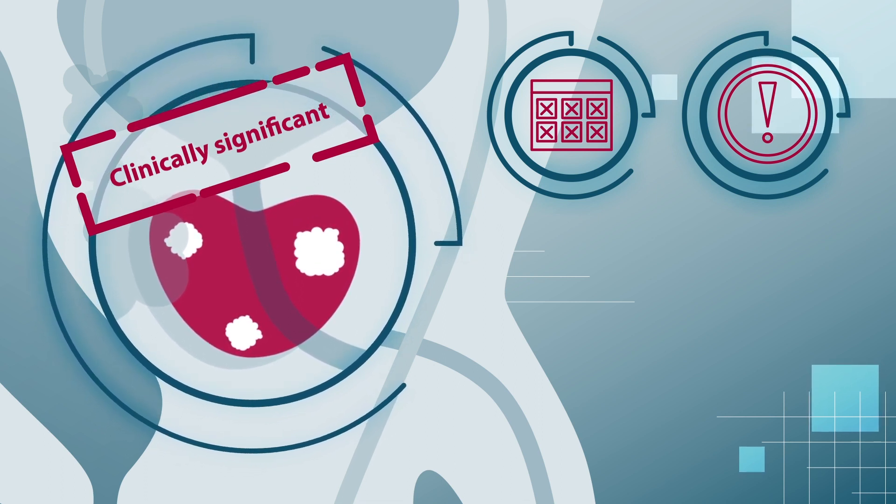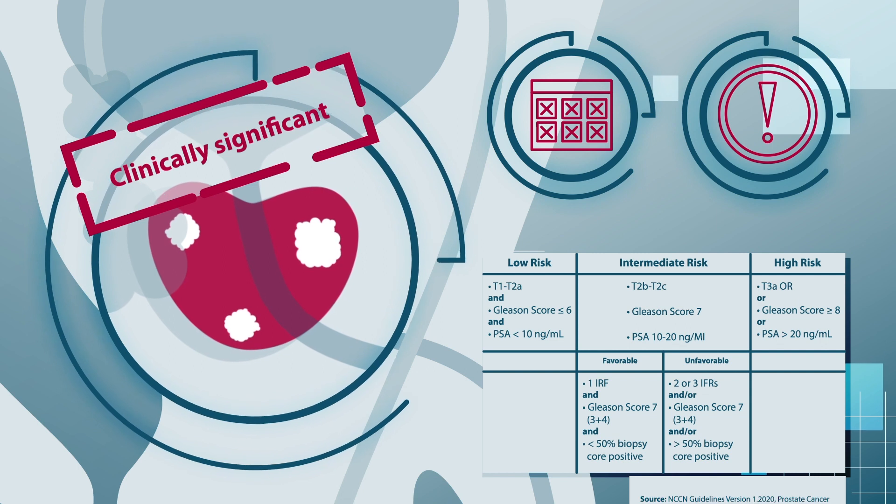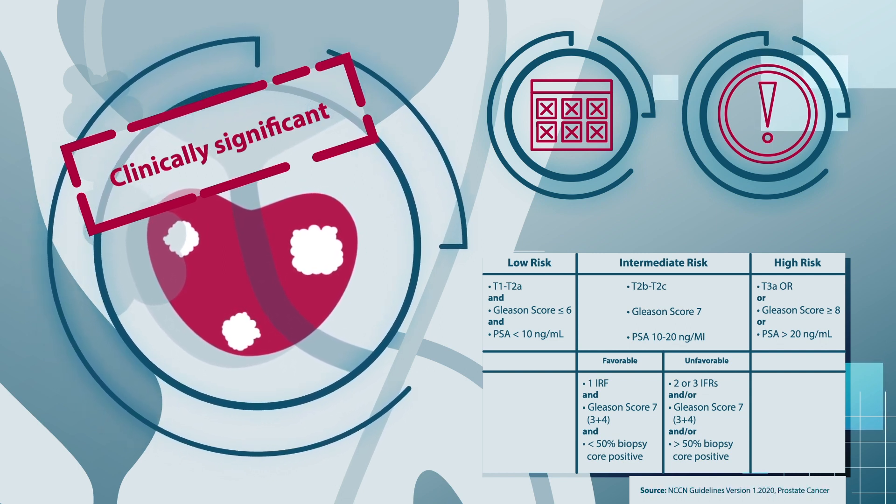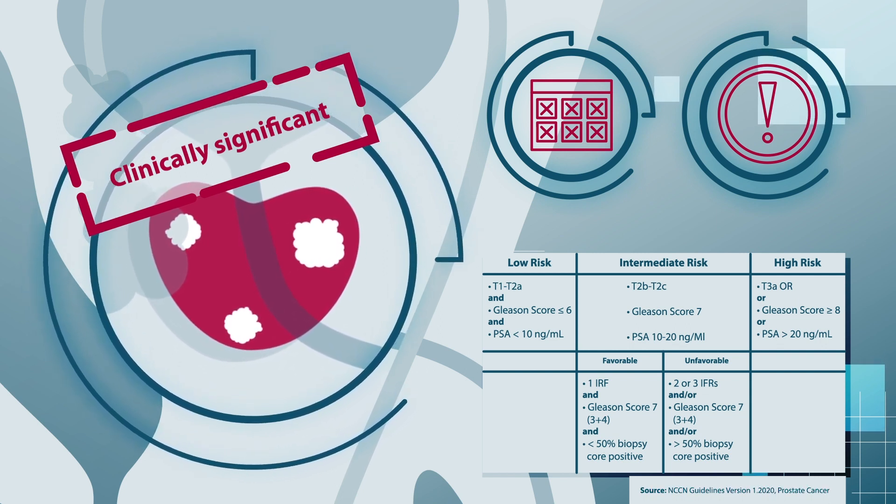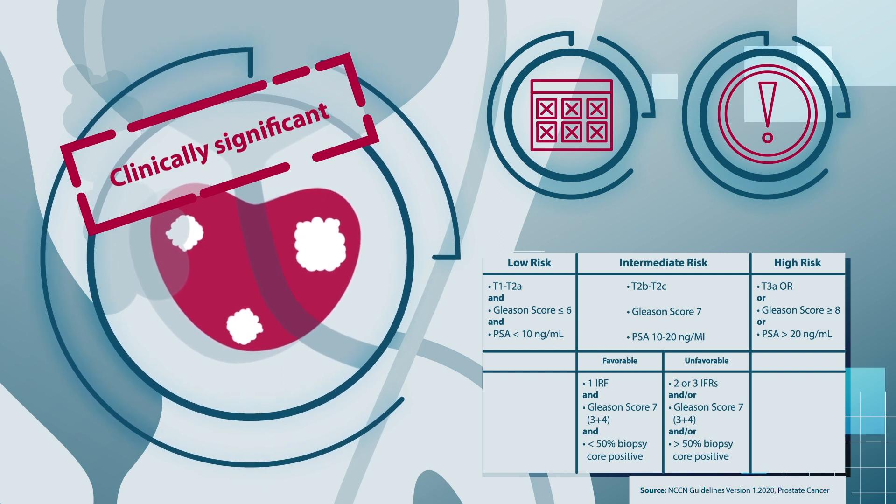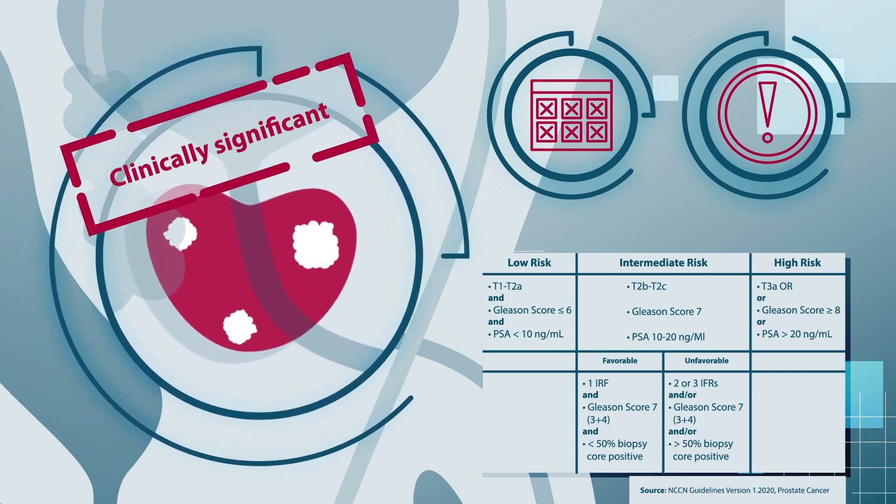How the tumour is treated depends largely on how advanced the tumour is at the time of diagnosis. Depending on the PSA levels, Gleason score and findings on palpitation, the primary stage is low, intermediate or high grade.